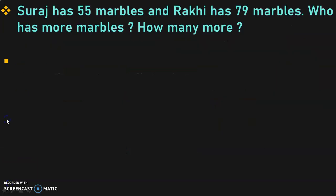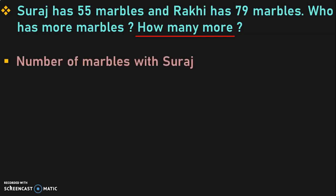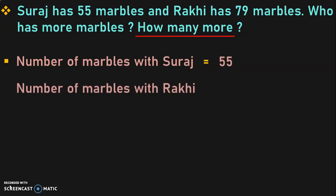The next sum: Suraj has 55 marbles and Raki has 79 marbles. Who has more marbles? How many more? The keyword here is 'how many more,' which indicates that we are going to deal with the subtraction operation. The next step is to write down the statements. Number of marbles with Suraj is equal to 55. Number of marbles with Raki is equal to 79.